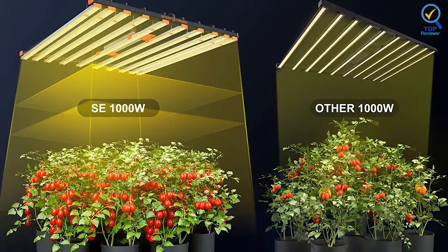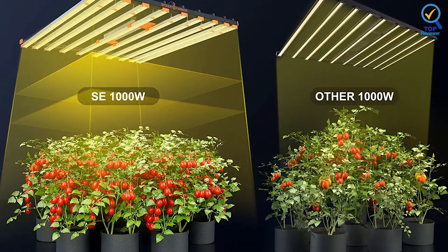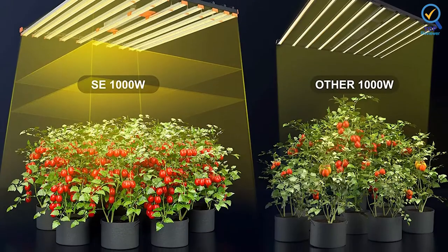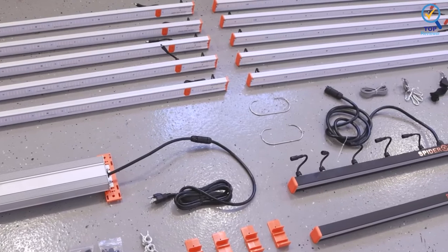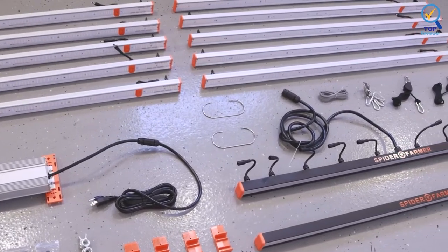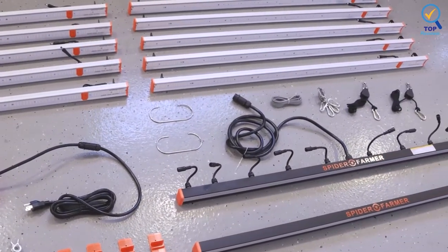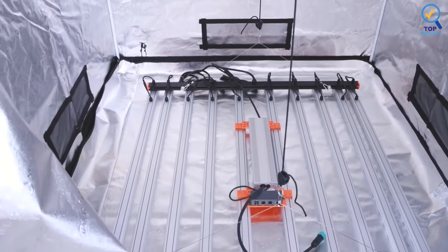Users can place the driver nearby by offering a detachable driver to reduce overall heat accumulation. The Spider Farmer SE 1000W features aluminum heat sinks to dissipate heat quickly and efficiently, making it the clear choice when wanting to reduce electricity bills stemming from HVAC.